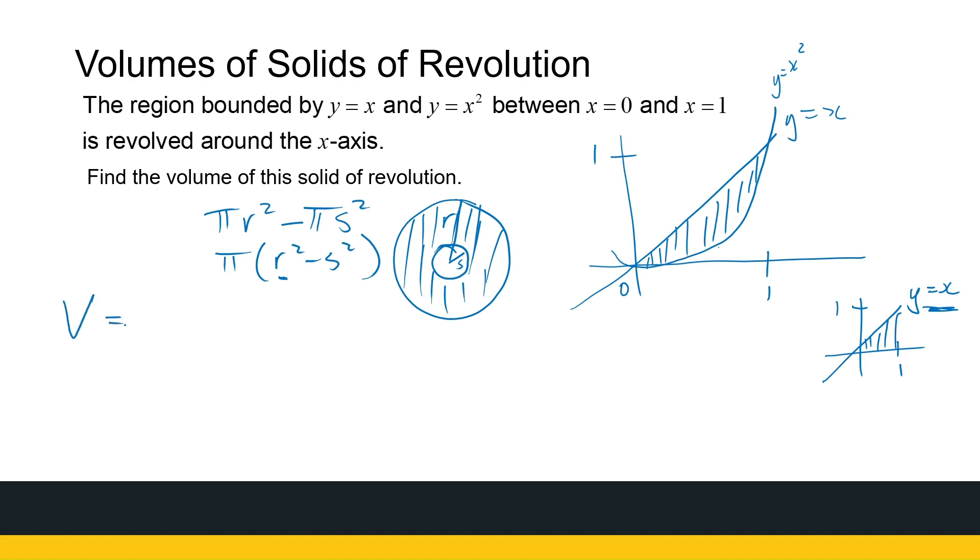But we're going to do the same thing that what we've been doing. The volume is the integral from 0 to 1 of the area of that slice. So that area is pi times, now my function, it's x, but I square it, minus the x squared that I square, dx.